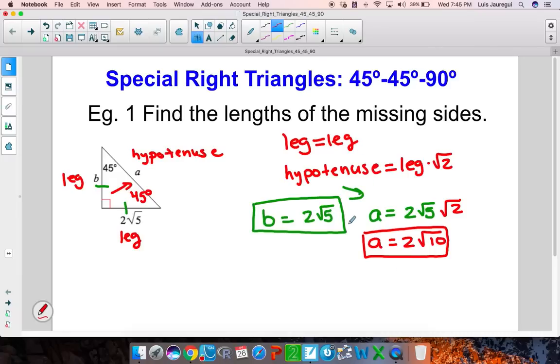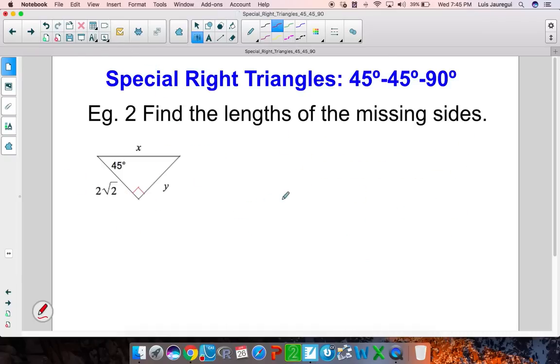So keep in mind these relationships when you're dealing with 45-45-90 triangles. Let's take a look at another example here. Find the lengths of the missing sides.